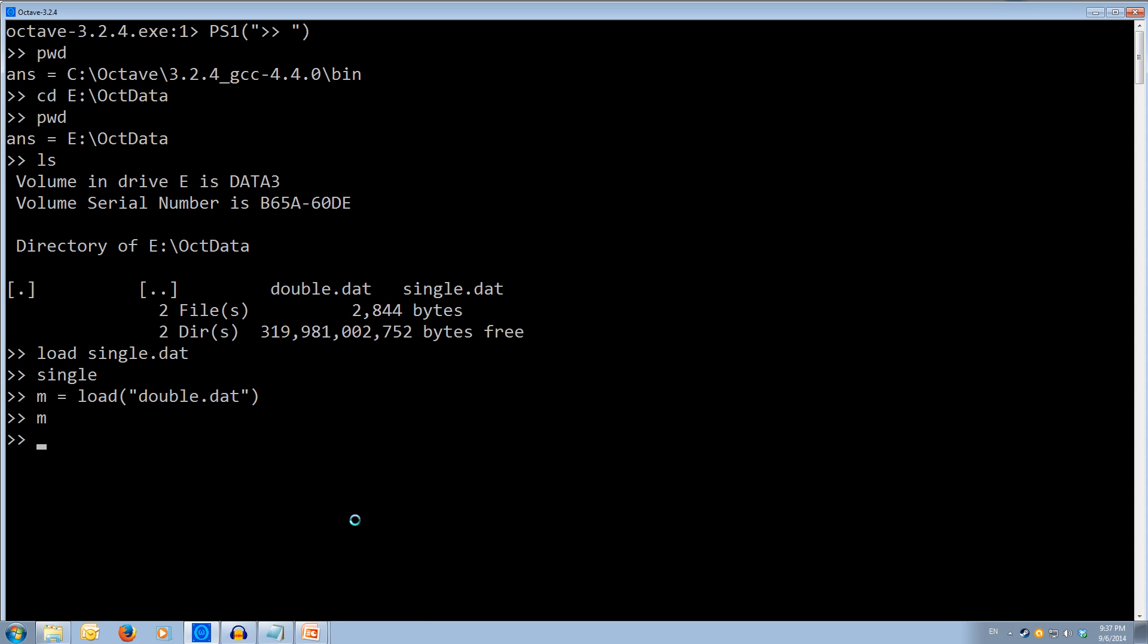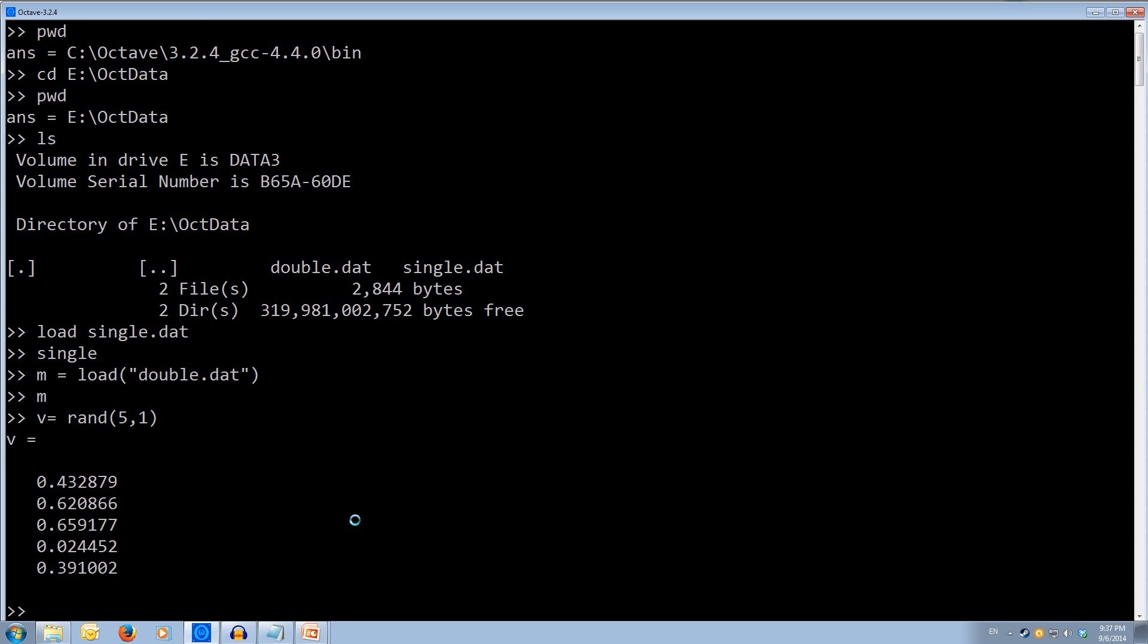Now we can also save data out. So let's create a variable called v and we'll set it to equal a random rand. And we'll do five values in a column and only one row. So, ok, so we've got this vector v now. So it's got five values in it.